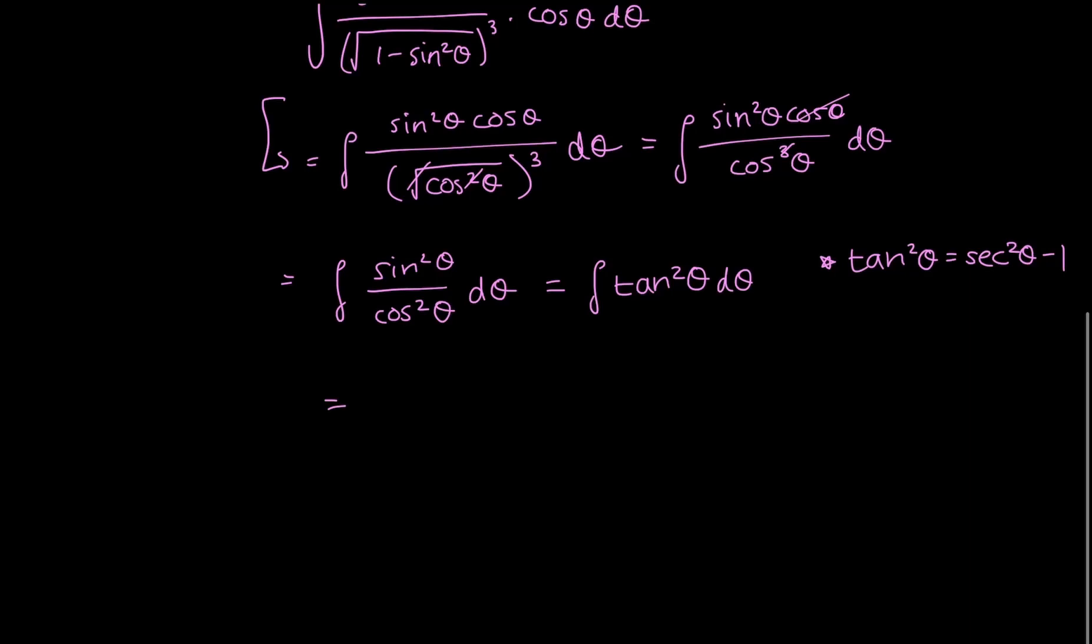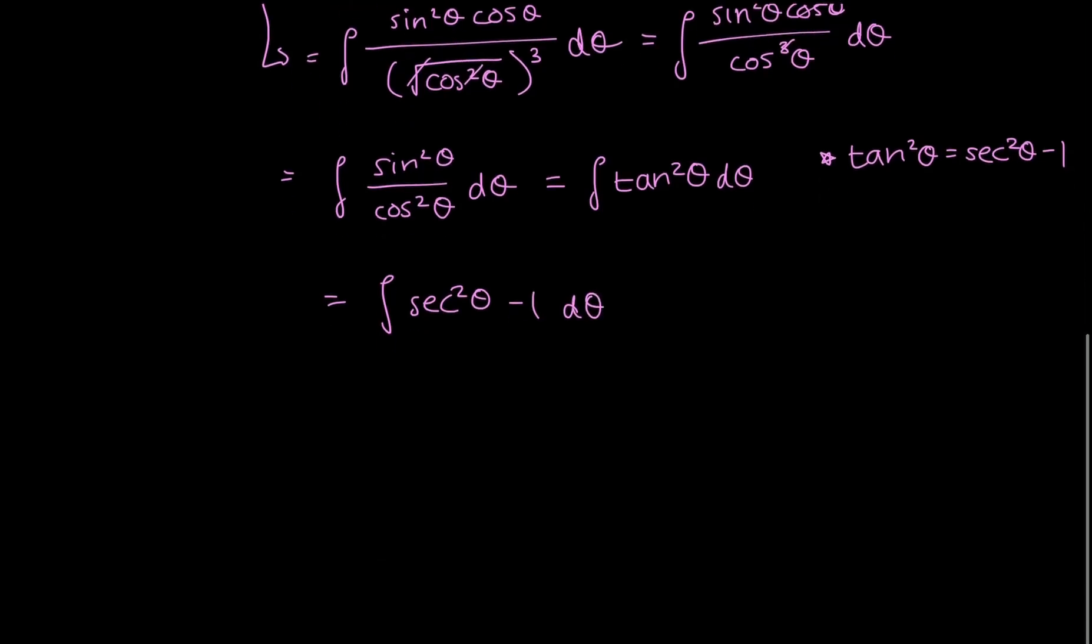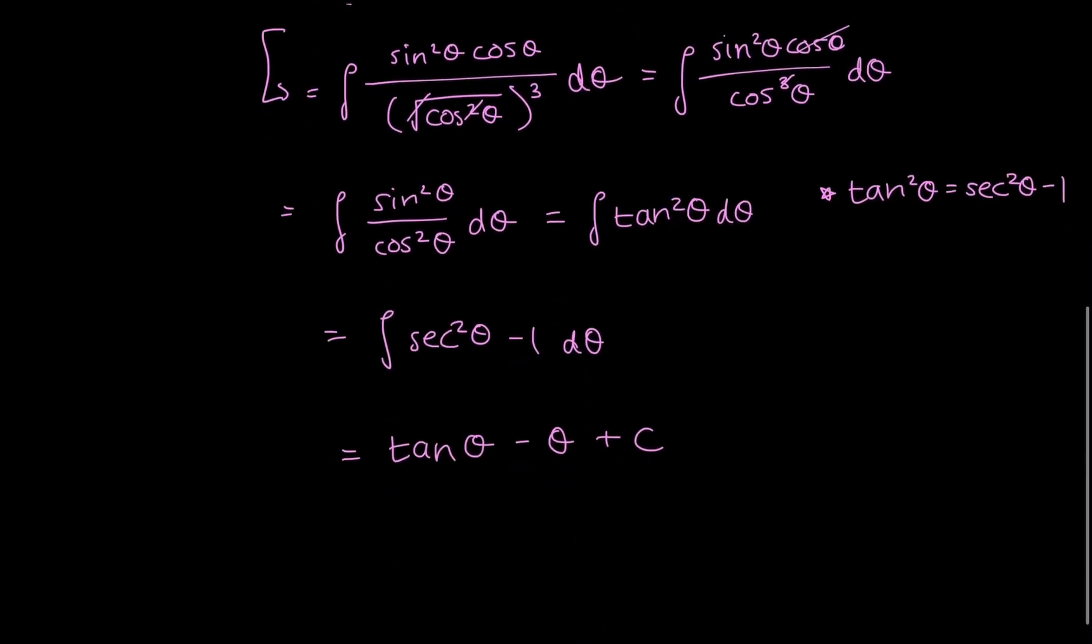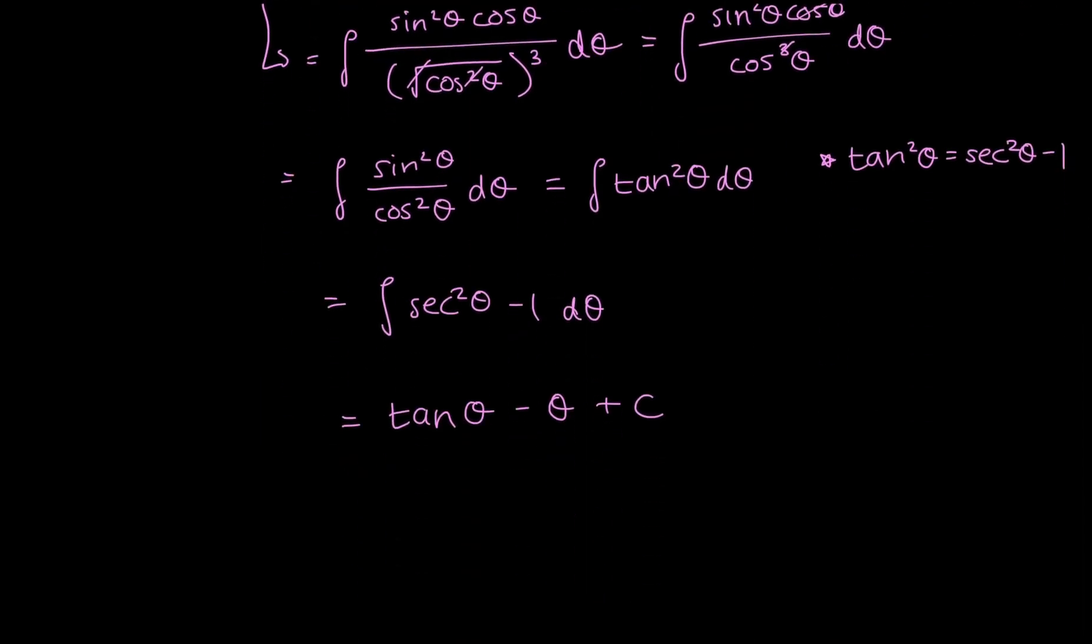So rewriting this, it's going to be equal to the integral of secant squared theta minus 1 d theta. This is very easy to integrate because I know that secant squared theta is the derivative of tangent. So integrating that, I get tangent theta minus theta plus an arbitrary constant C. This is perfect. Now I have everything integrated, but I'm not done. Because this is a substitution, and I originally started with a variable x, so I need to be consistent. I need to go back and substitute everything and rewrite this in terms of x.